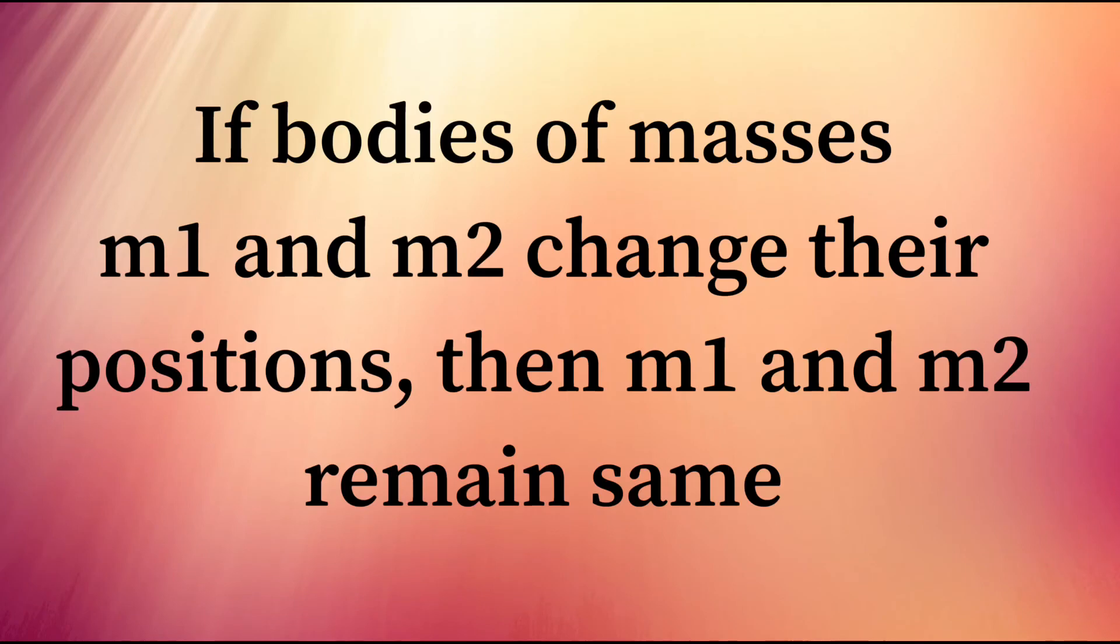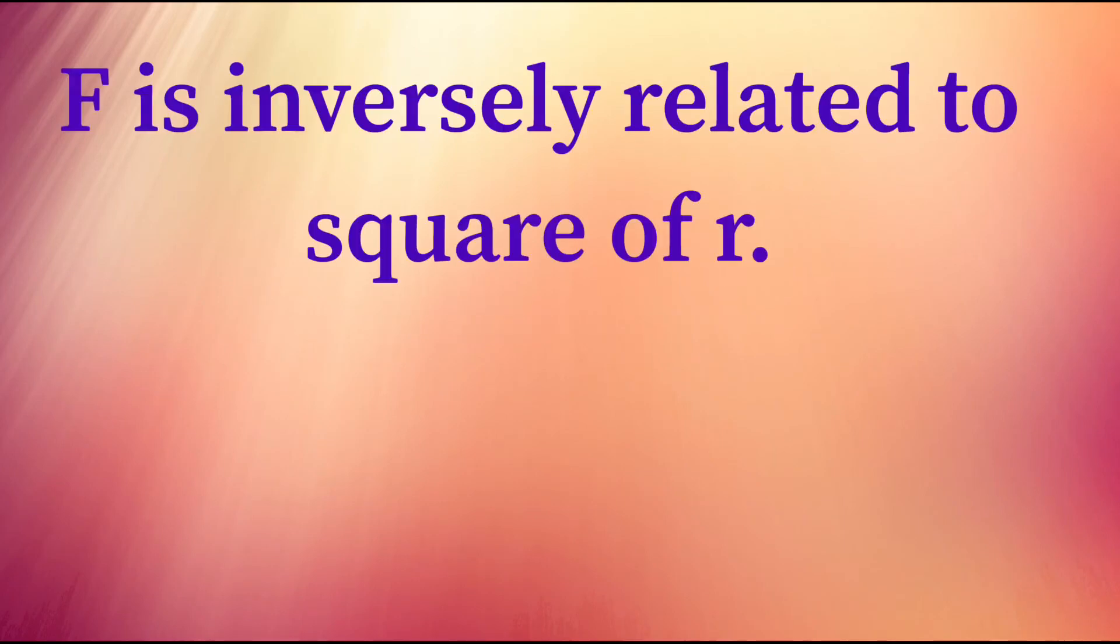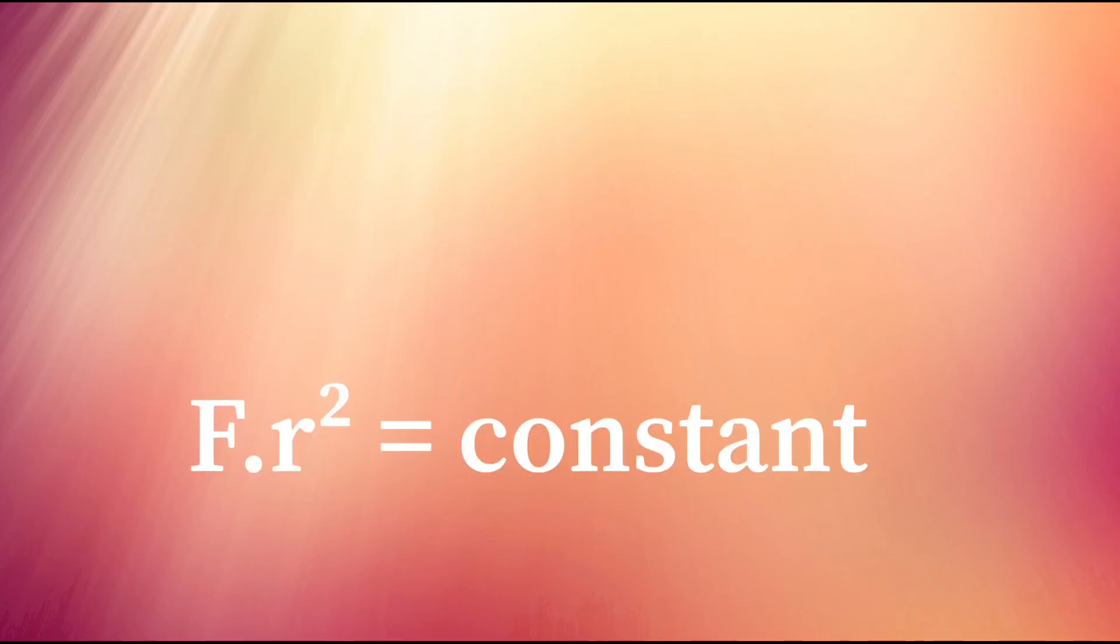For the same bodies, if their positions are changed, then masses also remain constant, so F is proportional to 1 by r squared. F is inversely related to the square of r, so F times r squared equals constant.